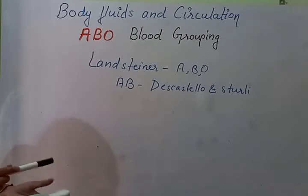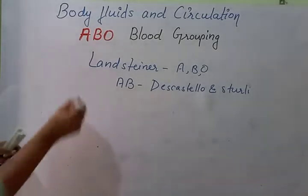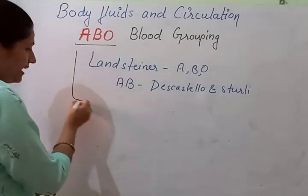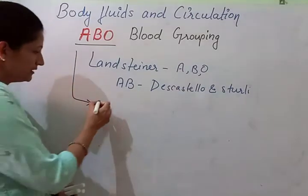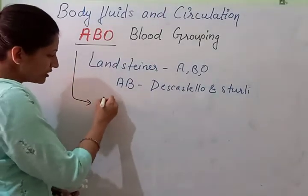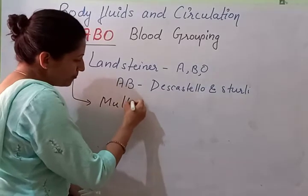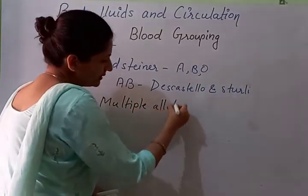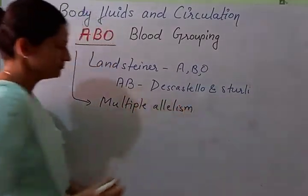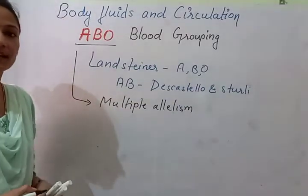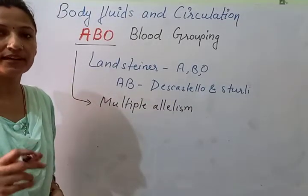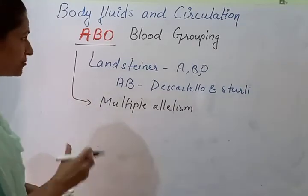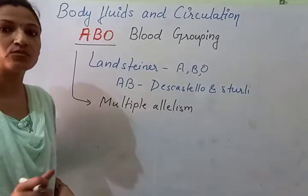When we talk about the blood group ABO system, we have this particular concept related to multiple allelism. In our grade 10, we have read the concept of inheritance of character. So the blood group is one of them.